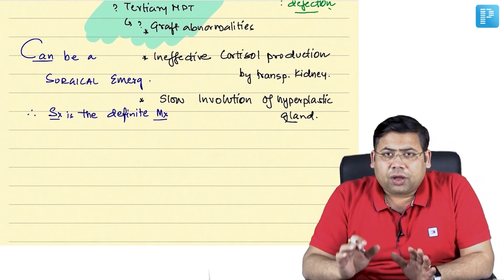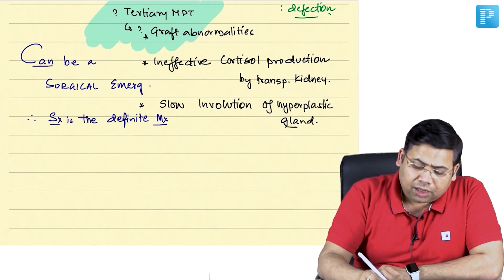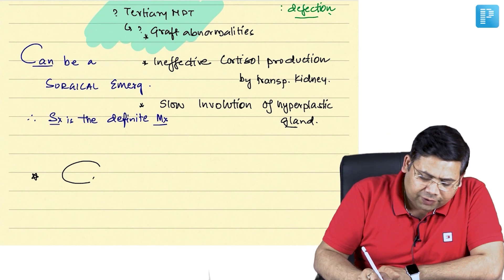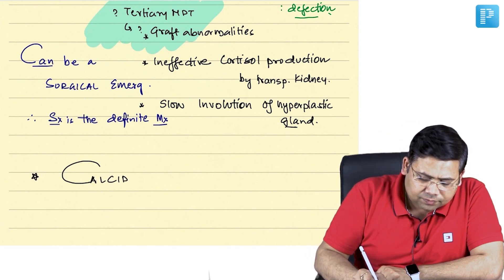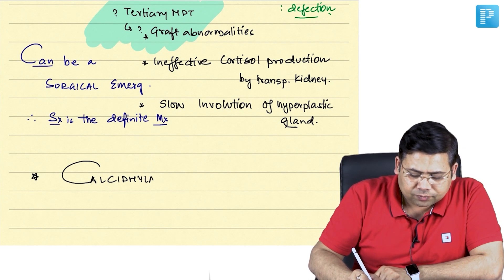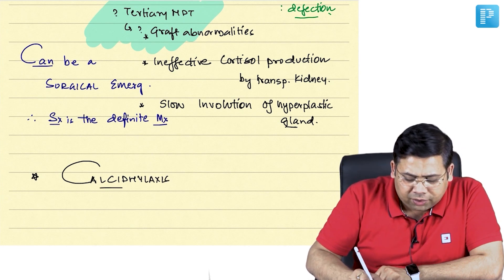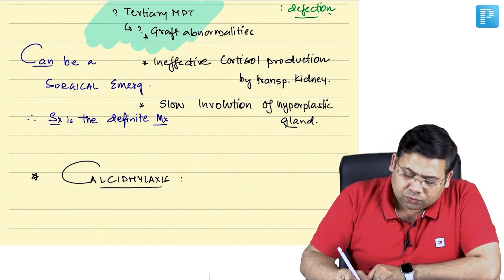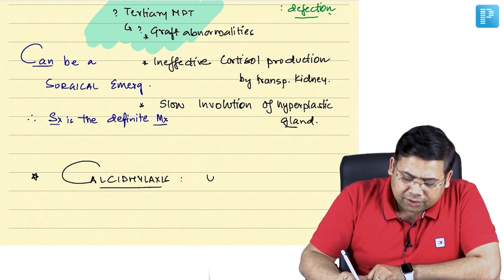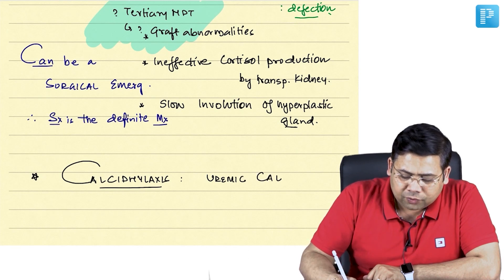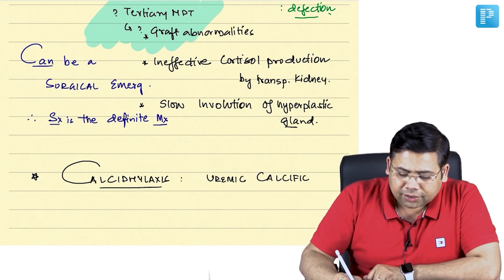Then one more problem that you have to understand with hyperparathyroidism is a problem of calcifilaxis. Calcifilaxis, what do you mean by calcifilaxis? The calcifilaxis term refers to uremic calcific arteriopathy.